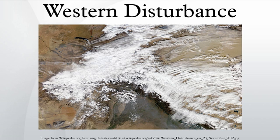Western disturbance causes winter and pre-monsoon season rainfall across northwest India. Winter months rainfall has great importance in agriculture, particularly for the rabi crops. Wheat among them is one of the most important crops, which helps to meet India's food security. During the season, normally four to five western disturbances in a month can be seen over northwest India.